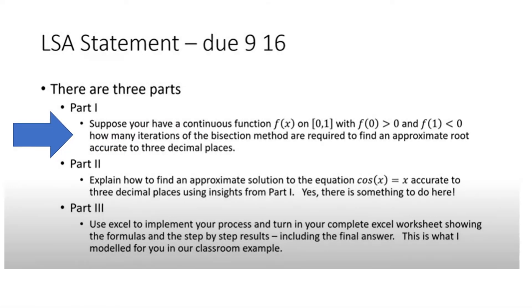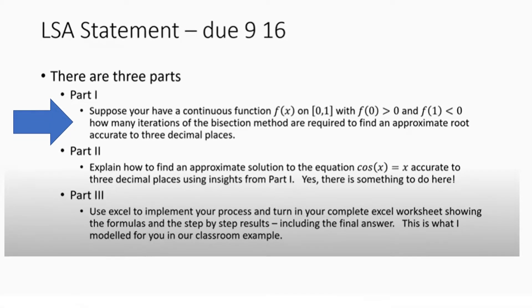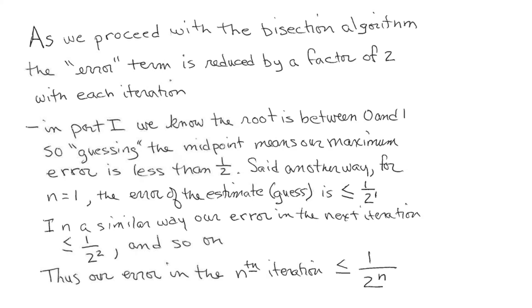So let's begin with Part 1. If you have a continuous function on [0, 1], with f(0) > 0 and f(1) < 0, how many iterations do you need to find an approximate root accurate to three decimal places? As we proceed with the bisection algorithm, the error term is reduced by a factor of 2 with each iteration. In Part 1, we know the root is between 0 and 1, so guessing the midpoint means that our maximum error has to be less than 1/2.